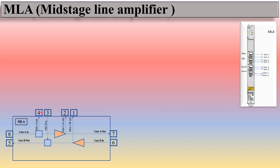Ports three and four belong to the OSC: OSC A out is from port four and OSC B in is from port three. Ports five and six belong to Line B — Line B input is port six and Line B output is port five. Similarly, Line A input is port eight and Line A output is port seven.